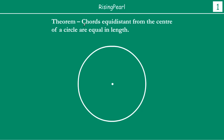The theorem is telling us that chords which are equidistant from the center of a circle are equal in length. They are equal in length. Chords means basically — if you take two points on a circle and you join them by a straight line, that is what is called a chord.